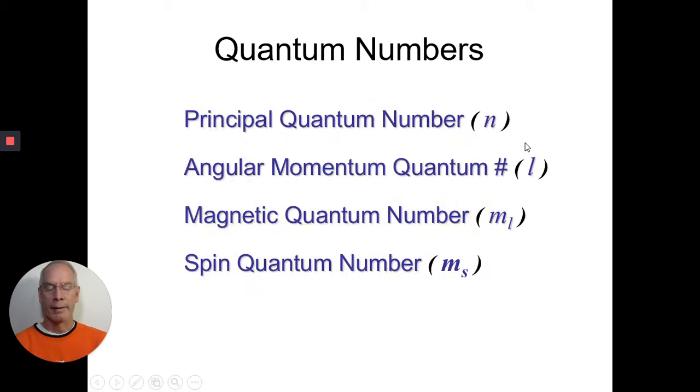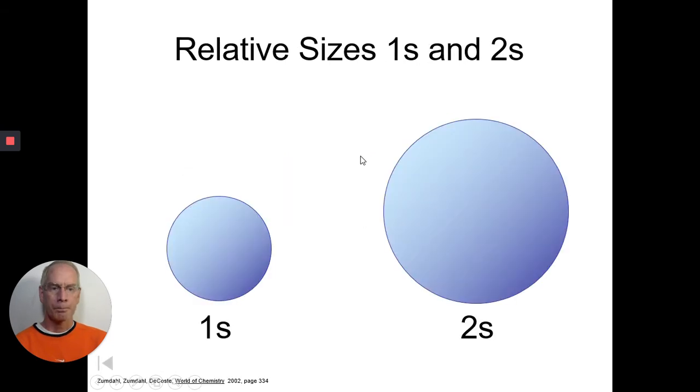So in chemistry, every atom has what are called four unique quantum numbers that give the address of where the electron will be. Now, they have letters. The principal quantum number is N, the angular momentum quantum number is L, magnetic M sub L, and spin M sub S. Now, I'll go into that a little bit more later.